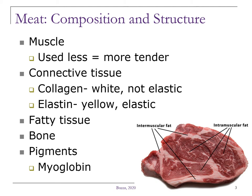The second structural component is the connective tissue. The connective tissue combines the muscle cells together. Collagen containing connective tissue is white, whereas elastin connective tissue is yellow in color. Less tender cuts of meat usually contain more connective tissue than the tender cuts of meat.